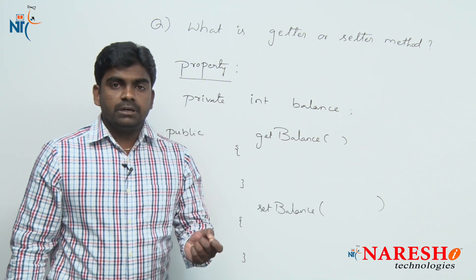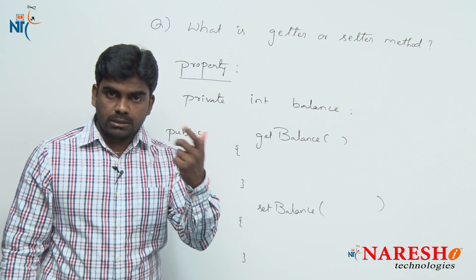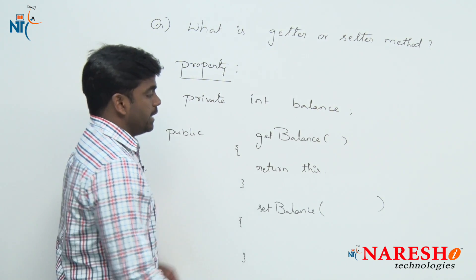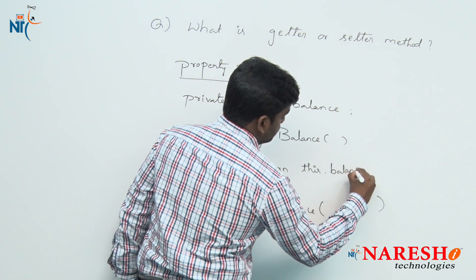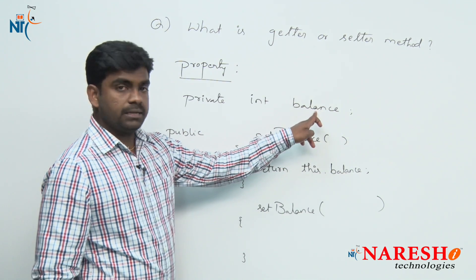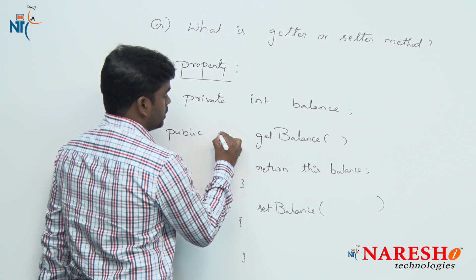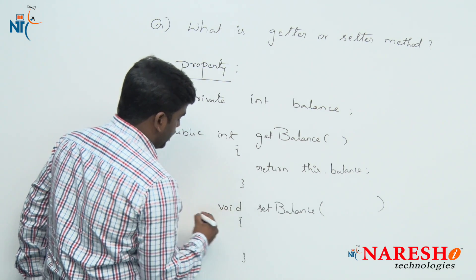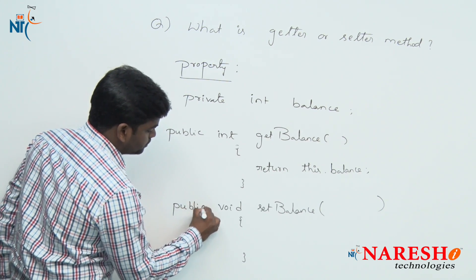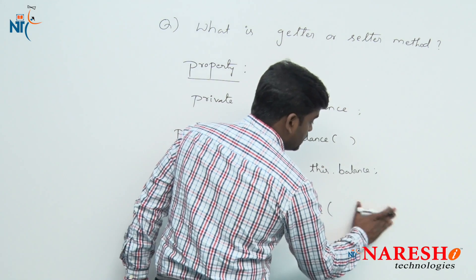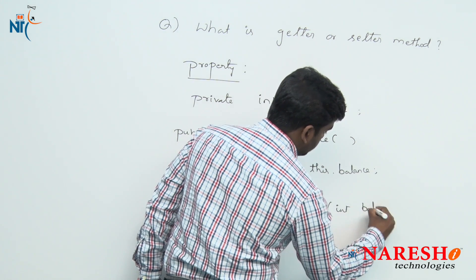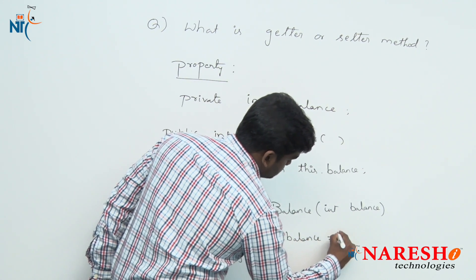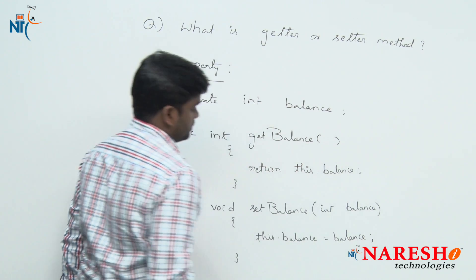The getBalance method: whenever you are requesting to get the balance, to collect the balance, it will return that balance — return this.balance — meaning the current account holder's balance. Balance is an integer type, so the return type of this method is also integer. But setBalance is not returning anything, so the return type is void. Both are public type. The setter method is not giving, it is taking — and it will set to the available balance: this.balance equals balance.